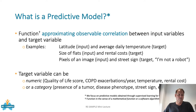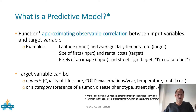The target variables can be of two different kinds in general. They can be numeric values, like for instance a quality of life score, the number of exacerbations per year, temperature, or rental costs. Or they could be a categorical prediction — for instance from CT diagnostics it could be the presence yes or no of a tumour, a disease phenotype, or a street sign category, and so on.